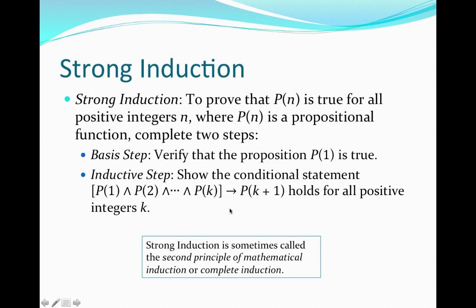Notice that our induction hypothesis is stronger, formally, since we are assuming more than just that the property holds for k — we're assuming that the property holds for every natural or positive integer less than or equal to k. We proceed to show why it holds for k plus 1, and by the same reasoning as for mathematical induction, this inductive step allows us to prove the property for all positive integers n.